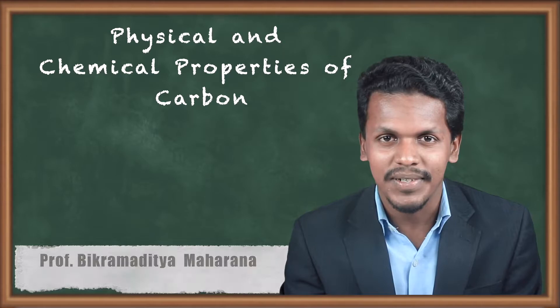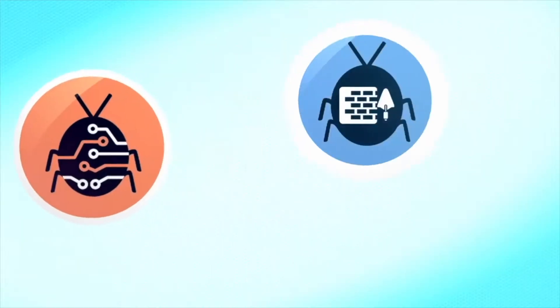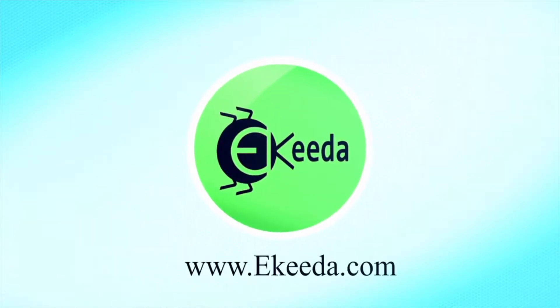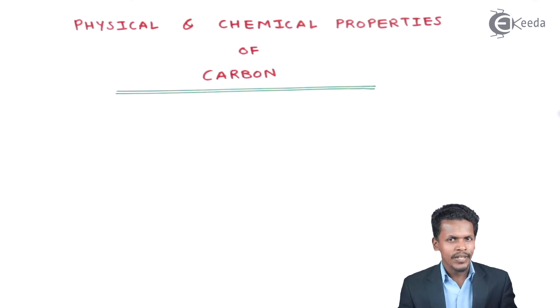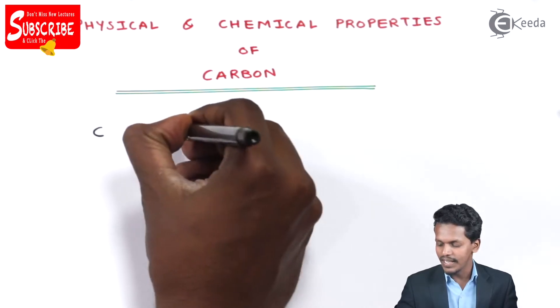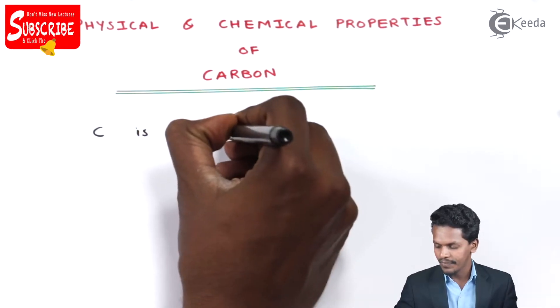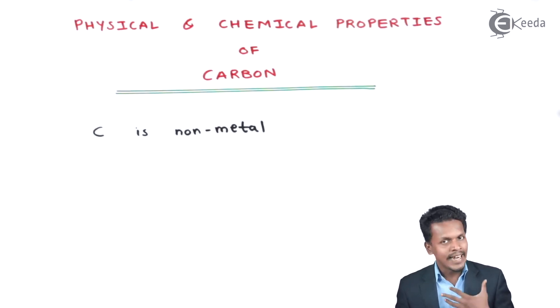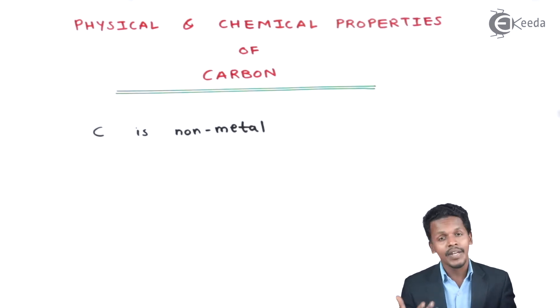So now let us understand the physical and chemical properties of carbon. The first physical property is that carbon is basically a non-metal. Carbon also has the property of showing catenation, so we could say that carbon exhibits catenation.